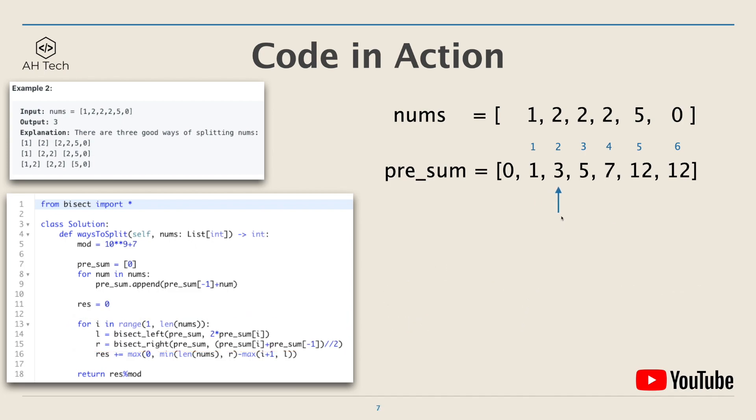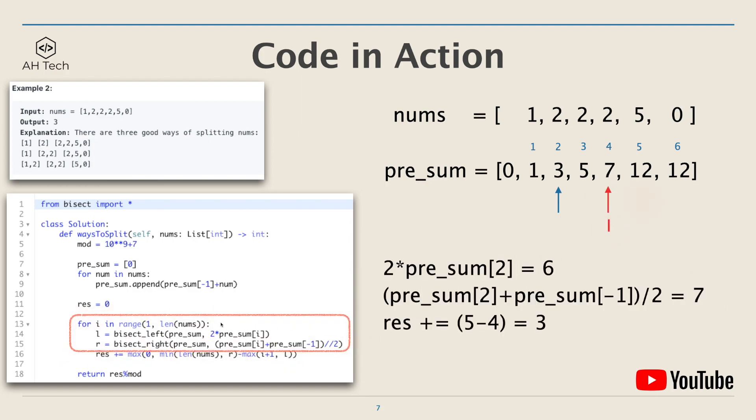Now move to index two and again binary search the left and right boundary. Two times pre_sum[2] is six, and pre_sum[2] plus pre_sum[-1] divided by two is seven. So now the left and right boundary is index four and five. We will add the difference into res, and now res will become three.